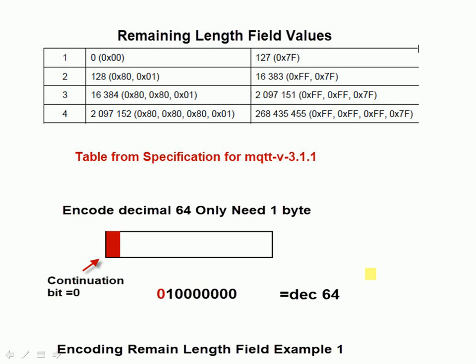Out of each byte we're only using 7 bits for the length, so if we've got 4 bytes we haven't got 32 bits to describe the length — we've only got 28 bits. The most significant bit of each byte is used as a continuation flag: if it's set to 0 it's not continued, if it's set to 1 then it is continued.